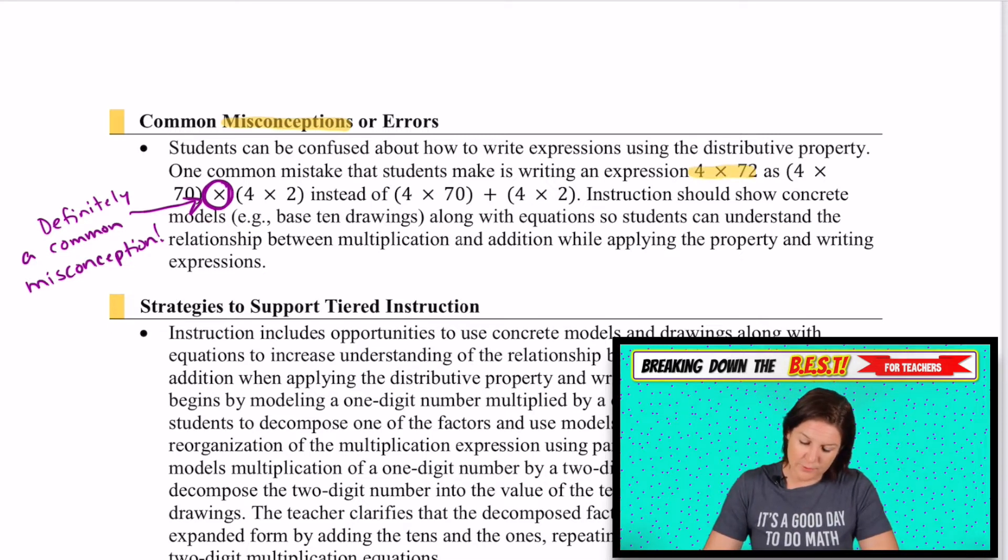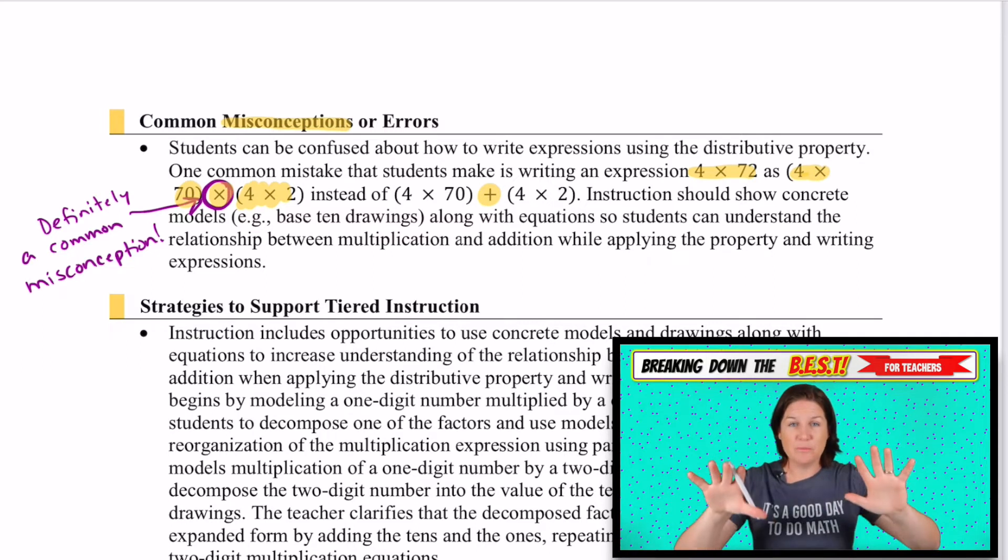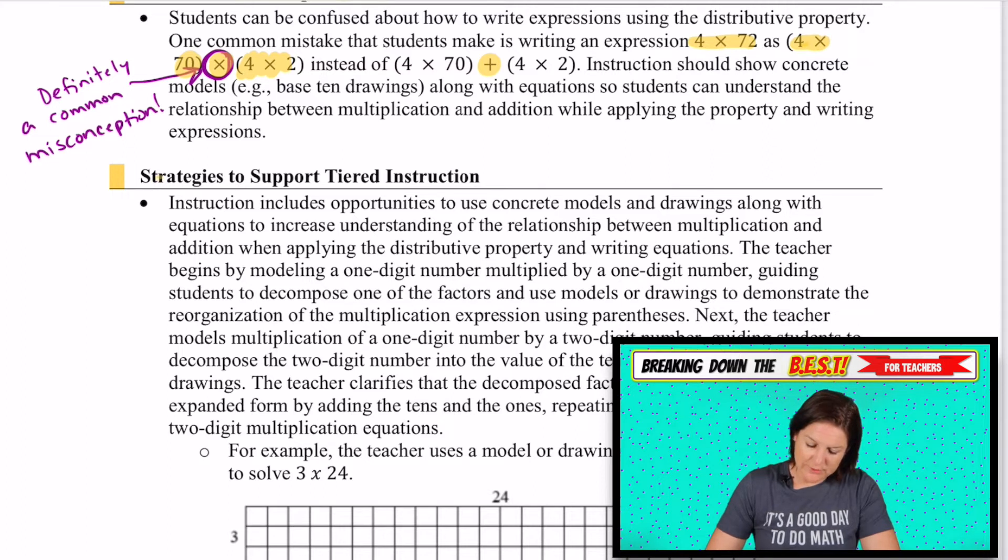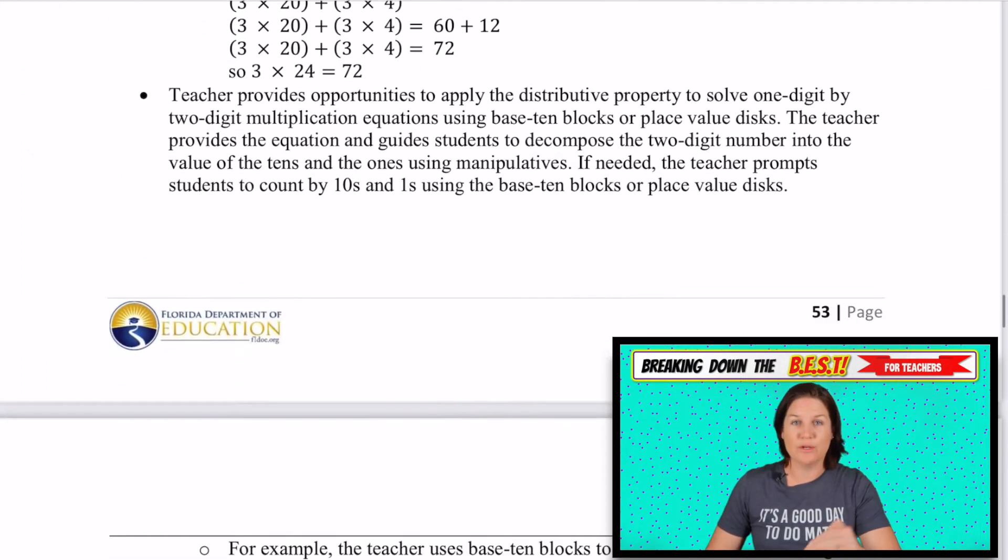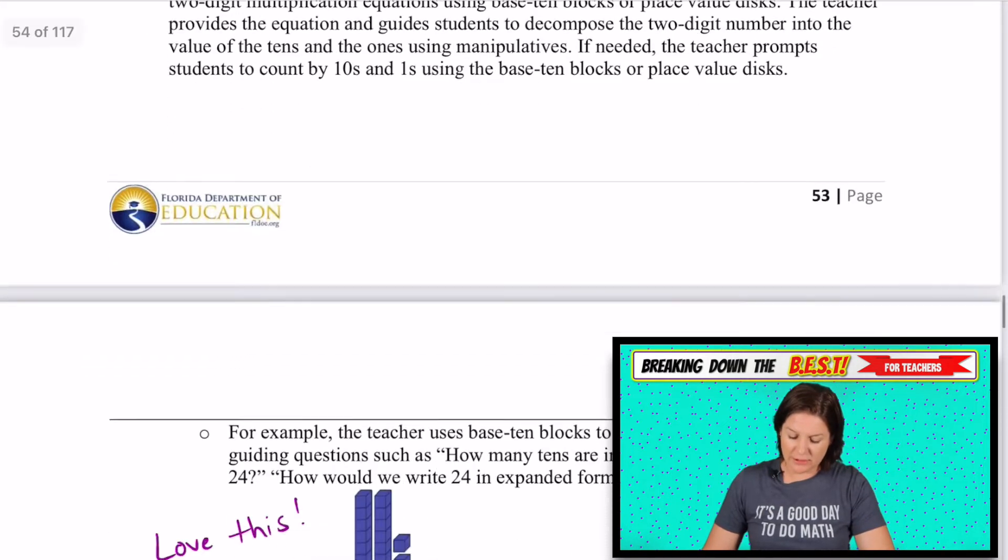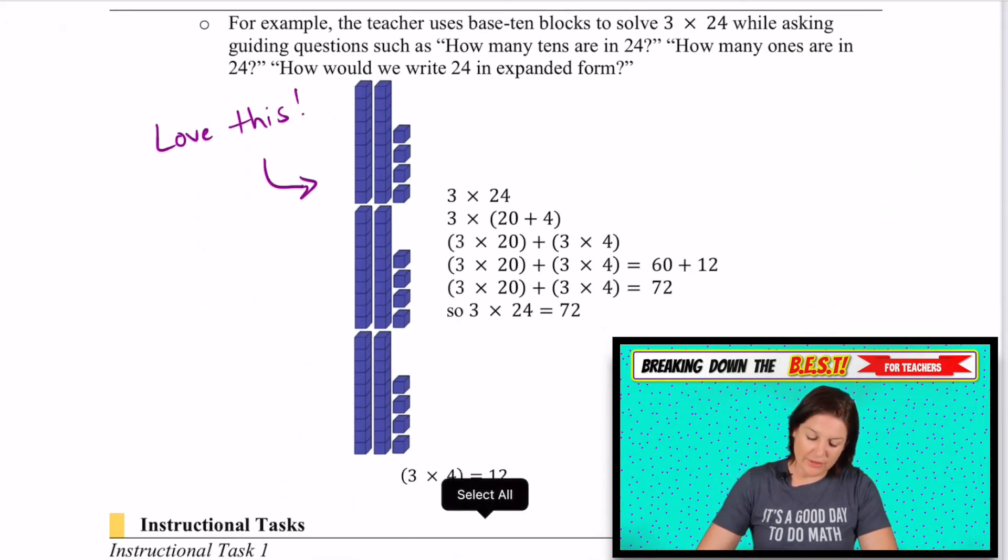And that is to say, if we had four times 72, students might break that into four times 70 times four times two, where that times should actually be a plus sign because we're just splitting the two parts and then we'll join the products at the end. So we're joining them together at the end, which means that we need to add this addition that I'm looking at right now. It looks like they've updated. They meaning the Florida department of education has added the strategies to support tiered instruction. And I would definitely take a look at that. If you're wondering how you can help your students get to the level, definitely take a look at that.